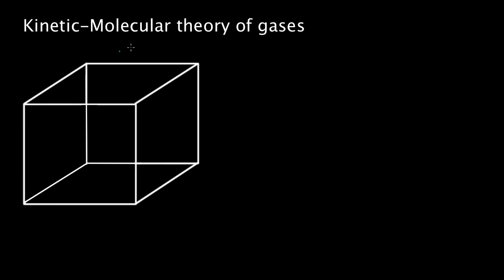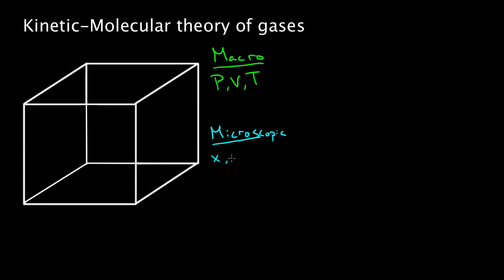The kinetic molecular theory of gases states that the macroscopic properties of a gas — like pressure, volume, or temperature — are just a result of the microscopic properties of the gas molecules, like their positions and speeds. If you knew those speeds and the distribution of speeds and positions, you could figure out these macroscopic properties.